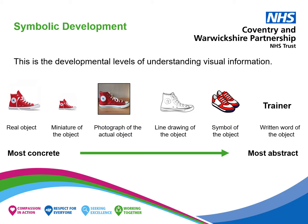This is the developmental levels of understanding visual information. Any of these levels can be used with the visual timetable. The easiest and most concrete for a person to understand is the real object. The next easiest is a miniature of the object, then a photograph of the actual object, then a line drawing of the object, then a symbol of the object. The most abstract and difficult to understand is the written word of the object.